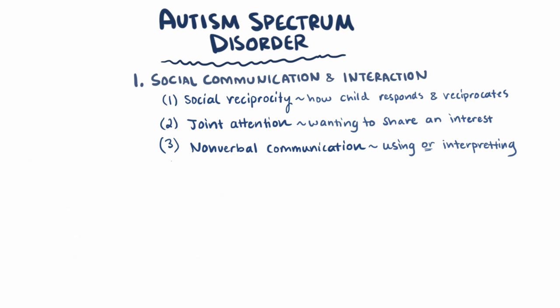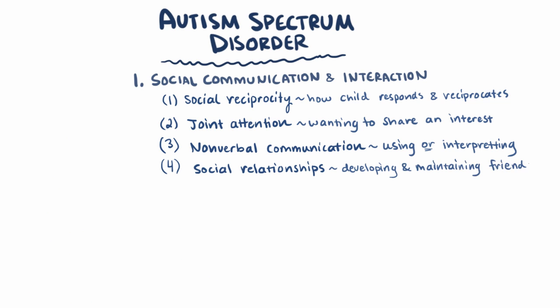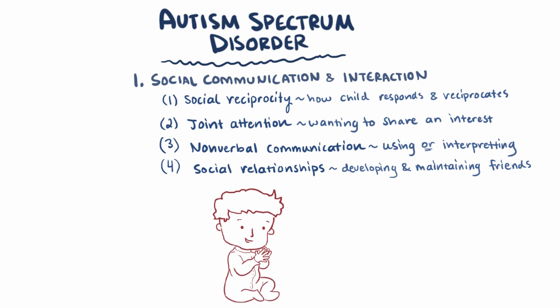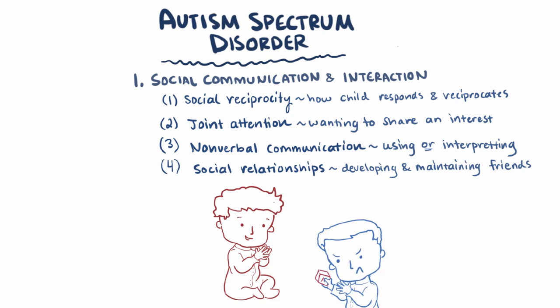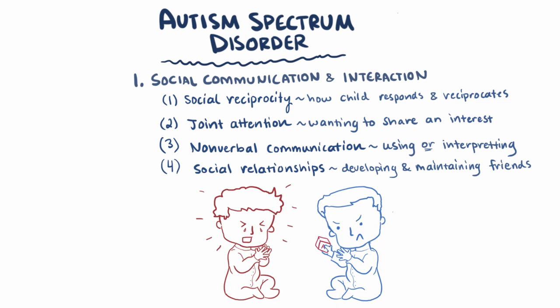The last subcategory of communication deficits is in social relationships. Children have trouble developing and maintaining relationships — so maybe the child has a hard time making friends, or they're able to make friends but their behavior tends to drive the friends away.